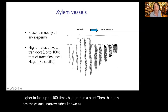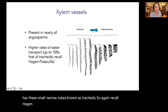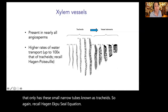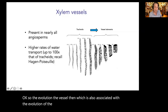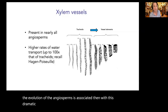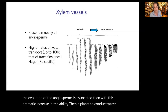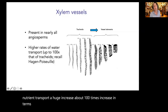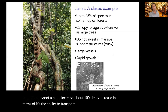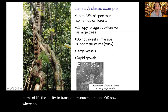Recall the Hagen-Poiseuille equation. The evolution of the vessel, associated with the evolution of angiosperms, brings a dramatic increase in the ability of plants to conduct water and nutrient transport — about a hundred times increase in the ability to transport resources per tube.